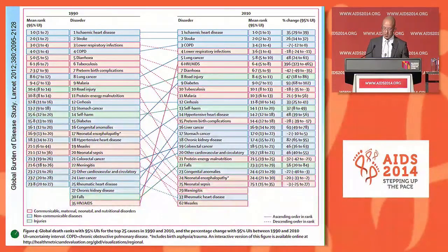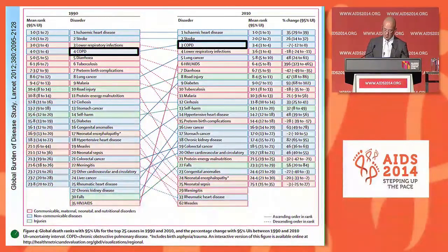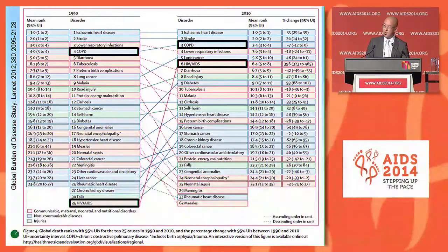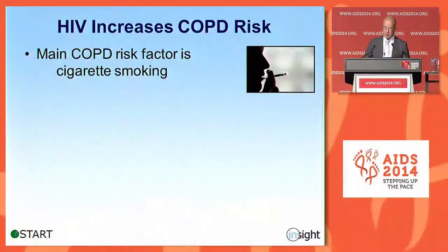From a public health standpoint, COPD is a major and rising global health problem. Between 1990 and 2010, COPD moved up to now become the third leading cause of death in the world. This is still higher than HIV. But as you know, HIV also increases the risk of several other diseases on this list, including coronary disease, ischemic heart disease, pneumonia, and lung cancer. What I think fewer people realize is that HIV also increases the risk of COPD.